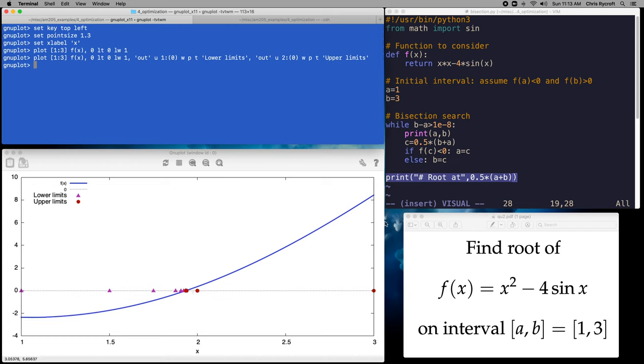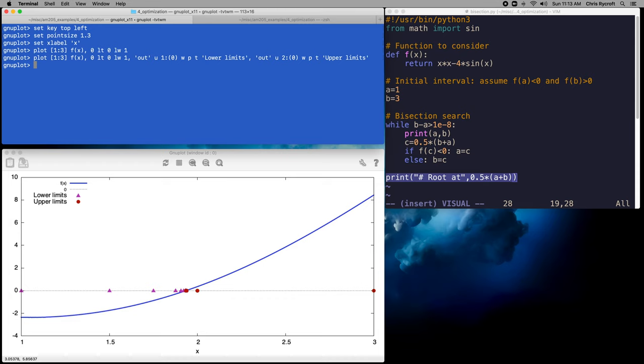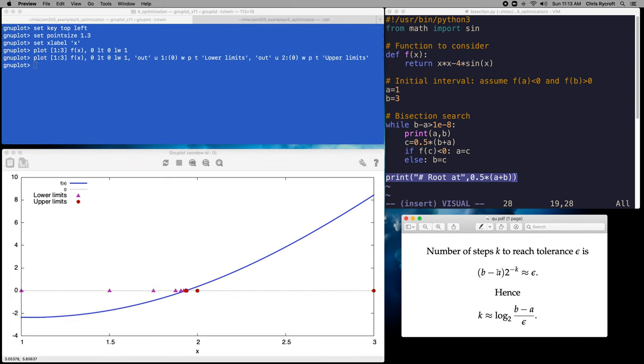An important question is to ask how many iterations we would need in order to find our solution to a given tolerance and to do this we can ask what is the size of our interval after we've taken k steps and suppose we wanted to reach a tolerance level epsilon then we could see that we would want b minus a times 2 to the minus k to be approximately equal to epsilon and therefore we would require that k is approximately equal to log 2 of b minus a divided by epsilon. And therefore we see that the number of steps required scales logarithmically with the accuracy level and this is good performance that can be quite practical in some cases.